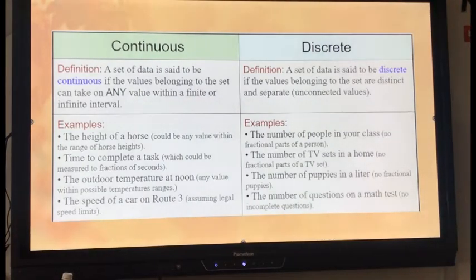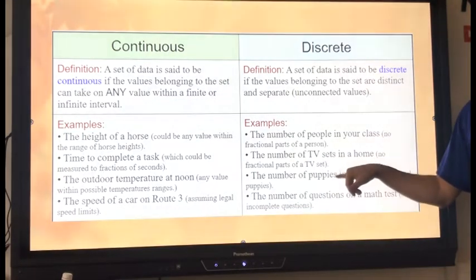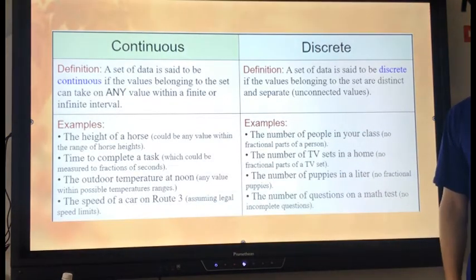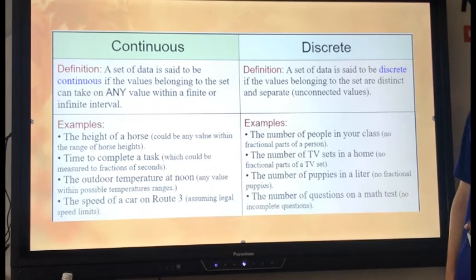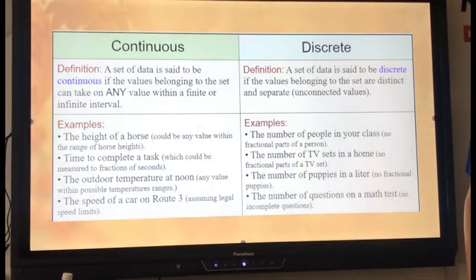Discrete. A number of people in your class. Sometimes there's seven people in here. Tomorrow there may be two people. After that, there may be 30 people in here. Number of TV sets in your house. I like what it does here. No fractional parts of a TV set. No fractional parts of a person. There isn't 8.5 students in this class. That would be, the cops would be involved if that was the case. Number of TV sets in your home. No fractional parts. You can't have half of a TV working anyway.